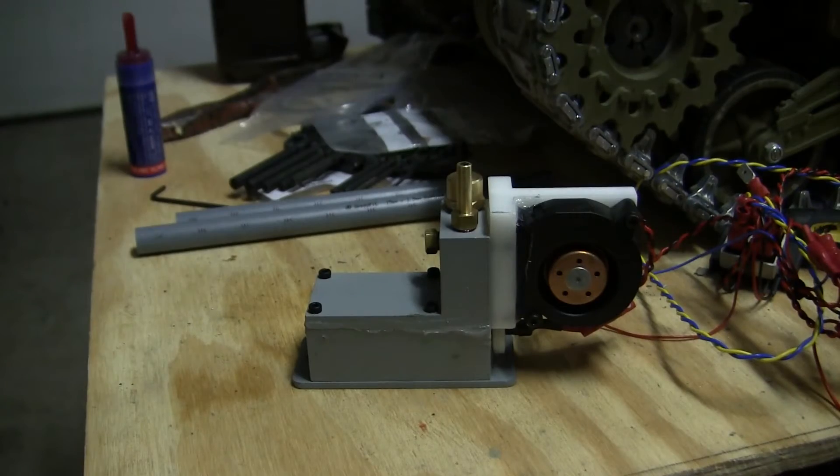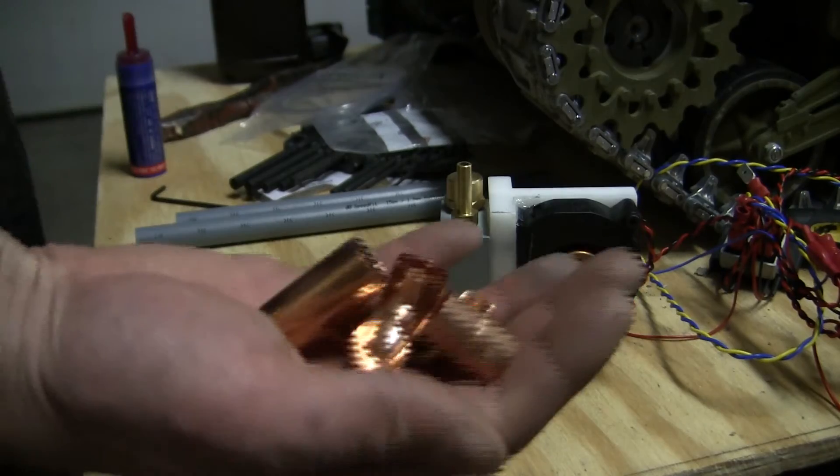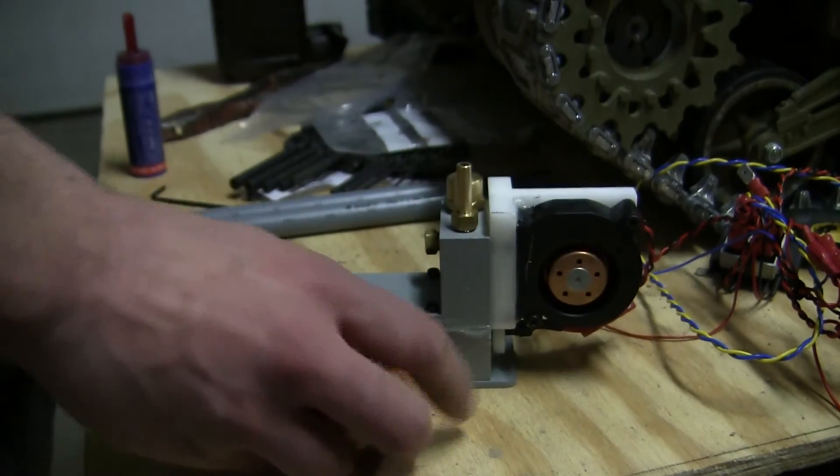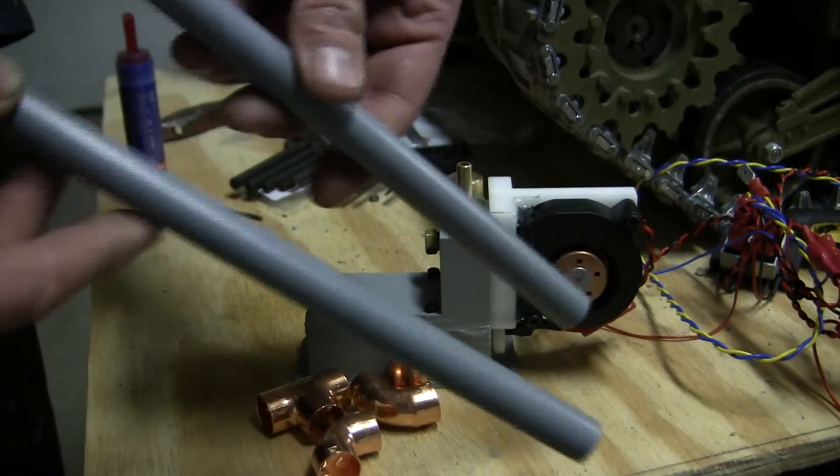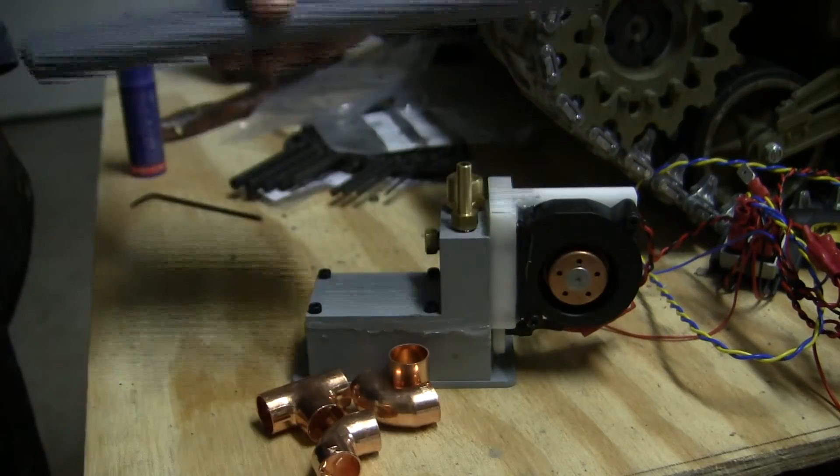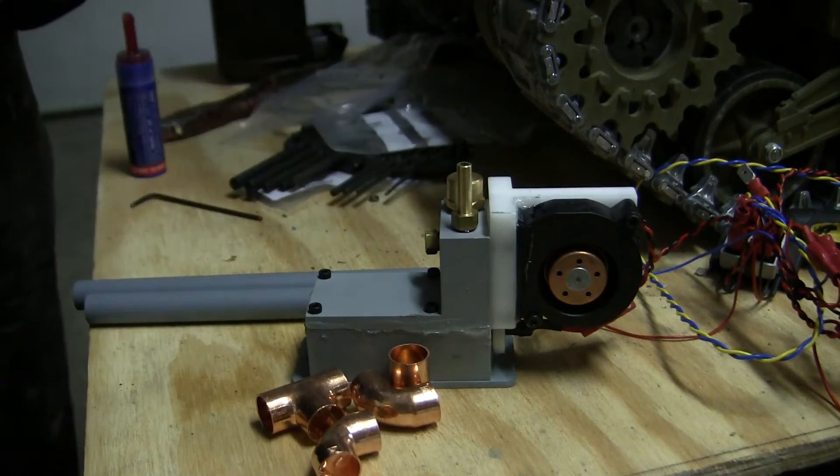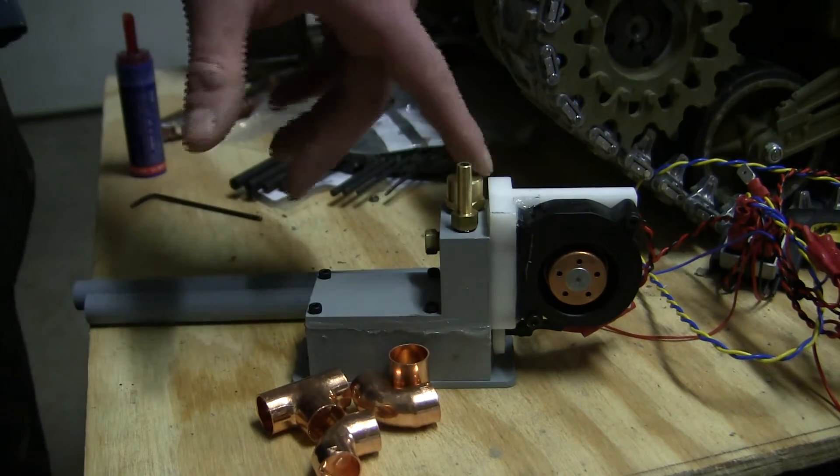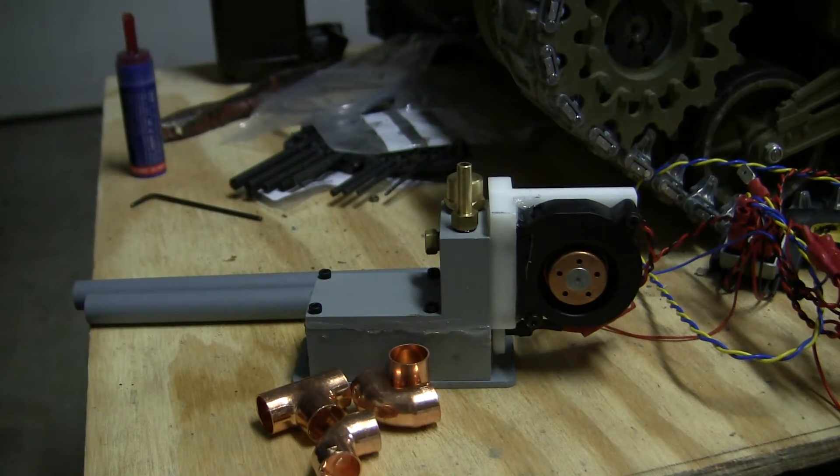In addition to coming with everything that you see here, the set also supplies you, the builder, with several pieces of plumbing fittings, as well as two PVC tubes. With the supplied PVC tubes, as well as the fittings, it gives you, the model maker, enough components to plumb your smoke system in any way which you deem fit.